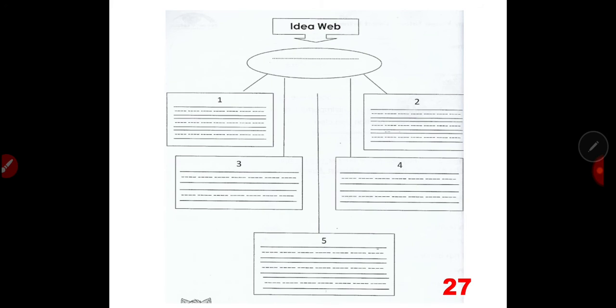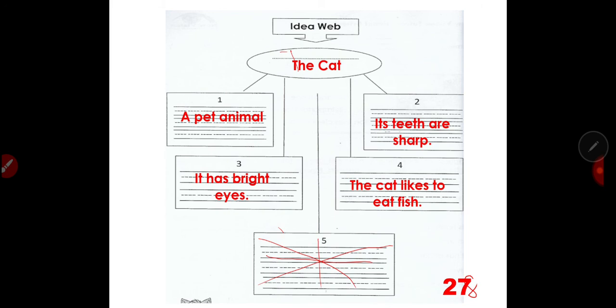This is in page 28. The title is The Cat. The idea web has 5 boxes but disregard number 5 because we only have 4 attributes of what a cat can do. The first one, when you go back to page 27, the first attribute of a cat is a pet animal. What about in number 2? Number 2, its teeth are sharp. Number 3, it has bright eyes. And number 4, the cat likes to eat fish. So, you are just going to transfer your answer in page 27 and then transfer it in idea web on page 28.